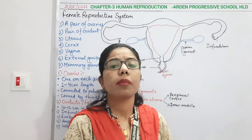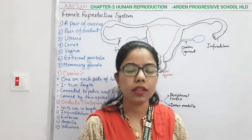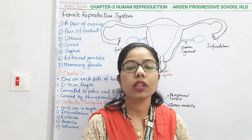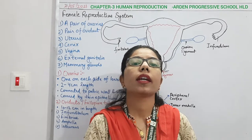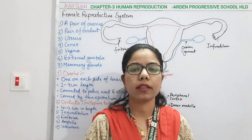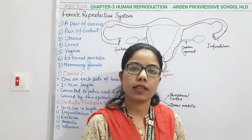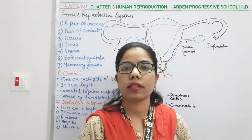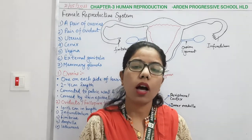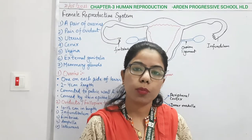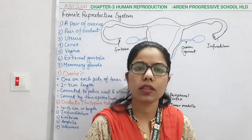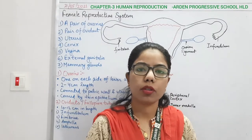Why is this important? Because in humans, reproduction is sexual reproduction, and for sexual reproduction there must be gametes — two different types: the male gamete and the female gamete. The male gamete is the sperm and the female gamete is the ovum. So how will they be produced?